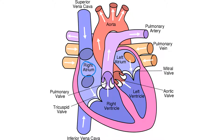Blood comes into the right atrium, passes through the tricuspid valve. There's a tricuspid valve and a bicuspid valve, and to remember which comes first, we say 'try before you buy.' It's called the tricuspid valve because — even though the diagram only shows two — there are actually three flaps on that valve.